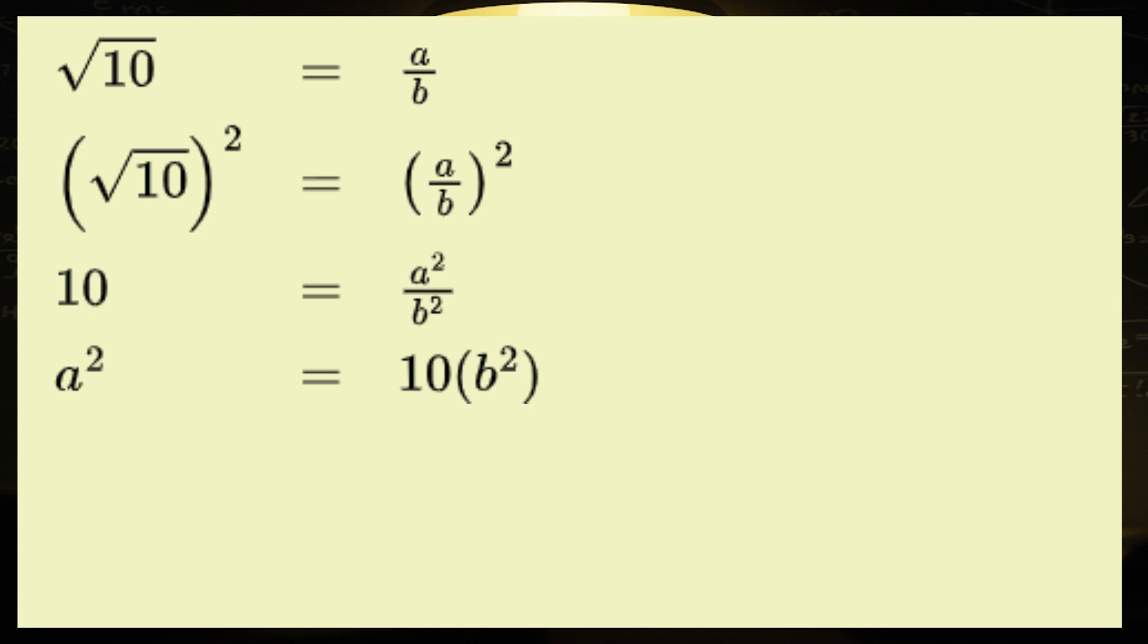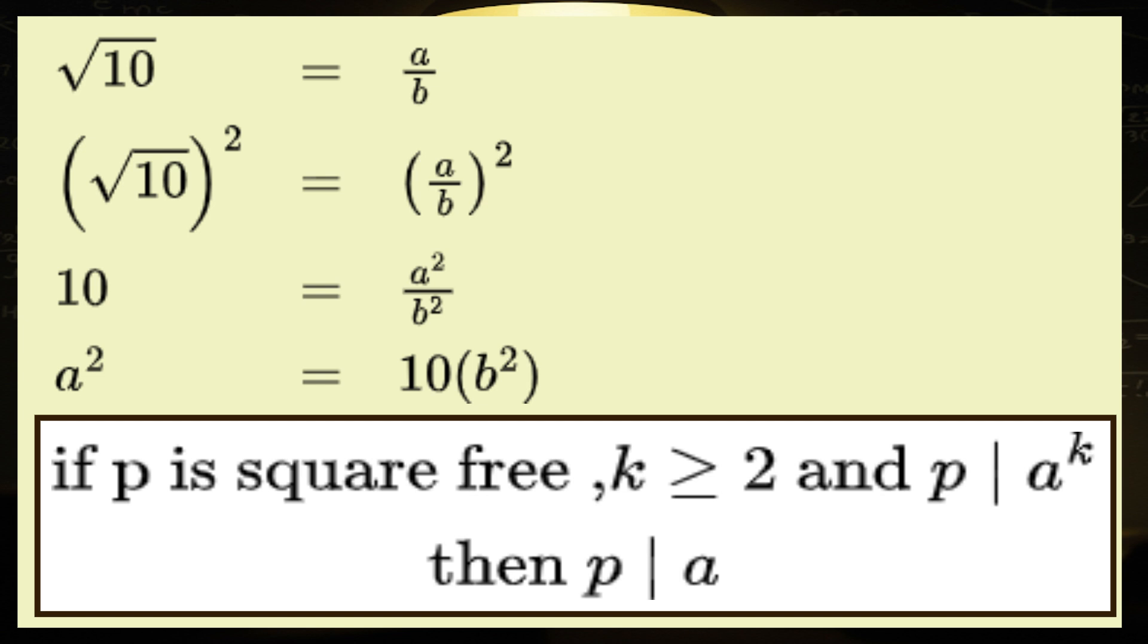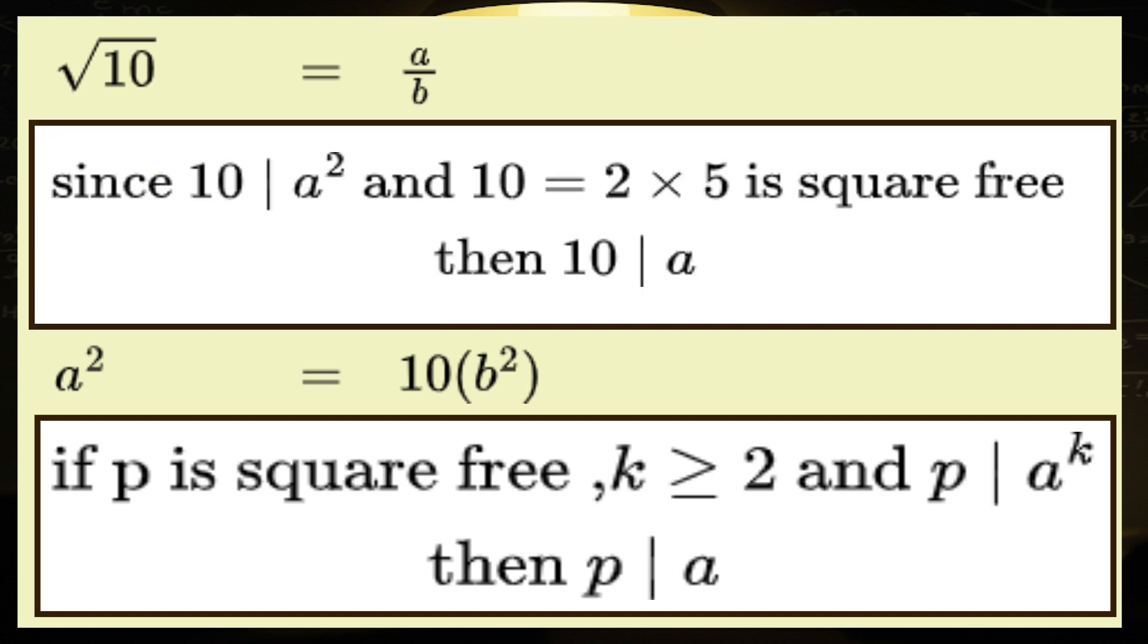There's this glorious little gem in math that says, if a square-free number divides a square, it must also divide the number itself. And guess what? 10 is square-free. It's got a prime factorization of 2 times 5, and each prime appears exactly once, no repeats, no drama. So, we've got a free pass to say, hey, 10 divides a. This is getting good.